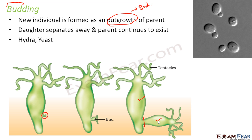Budding is not only seen in hydra, it is also seen in yeast. Looking at yeast, there is a small outgrowth on the yeast cell. This outgrowth will mature and separate out from the yeast. Sometimes the outgrowth becomes quite matured and before it could detach itself from the parent organism, another outgrowth is seen on that outgrowth also. So by the time it actually detaches from the parent body, it itself already has an outgrowth on its body. This process is known as budding.